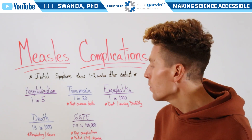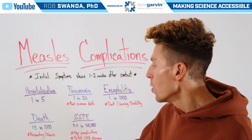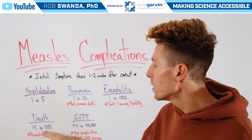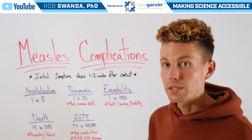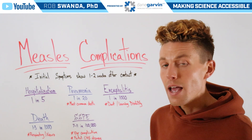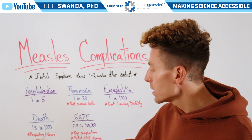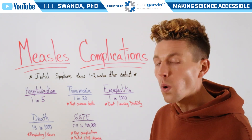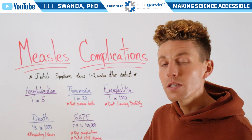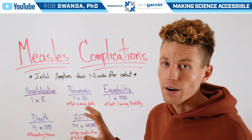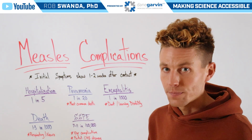Lastly would be death, which is about 1-3 in every 1,000 cases, and this is typically due to respiratory or neurological complications from a viral infection.